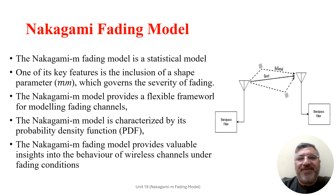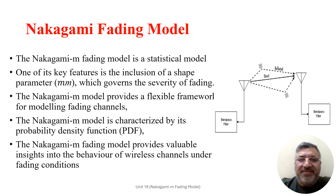The statistical nature of the Nakagami-M model is used to describe the variation in signal strength experienced by wireless signals as they propagate through the channel. One of its key features is the inclusion of the shape parameter M, which governs the severity of the fading. Higher values of M indicate less severe fading, while lower values of M represent more severe fading conditions.